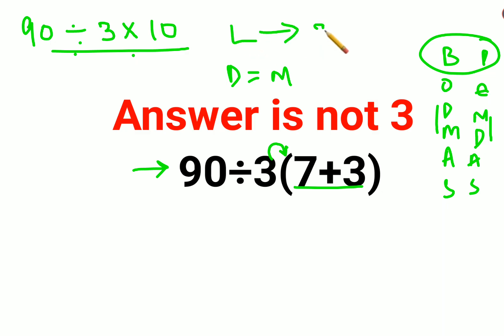So 90 divided by 3 is 30, into 10. Basically the answer is 300. I hope this is very clear to everyone.